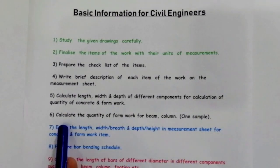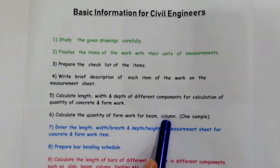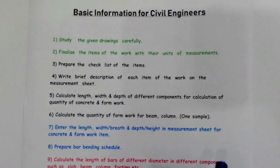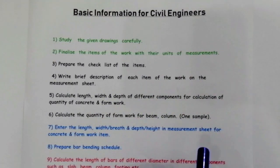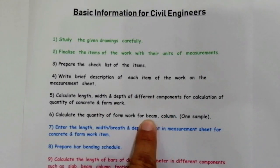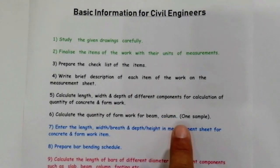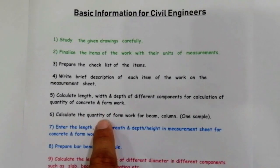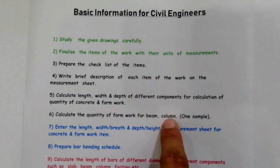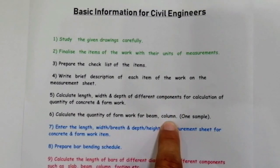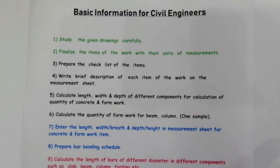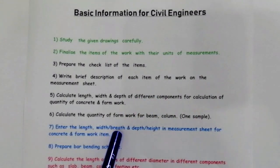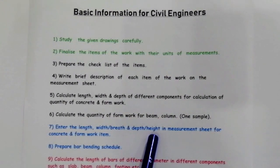The sixth point is: calculate the quantity of formwork for beam and column. If you want to find formwork for beam or column — for example, if you have 16 columns or 15 beams — you first find the quantity of formwork for one, then you can find it for all columns or beams, or any other component.